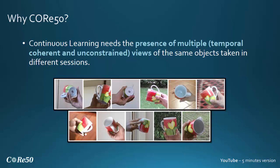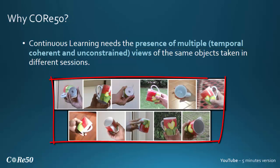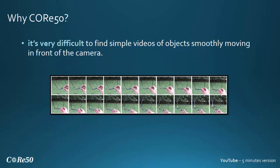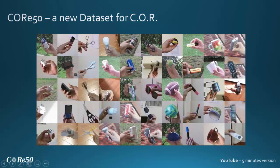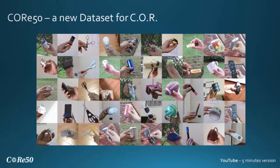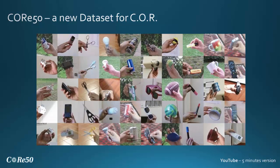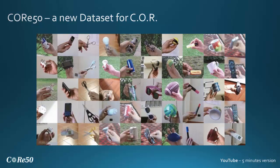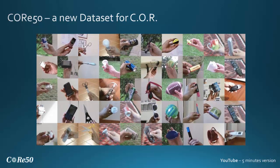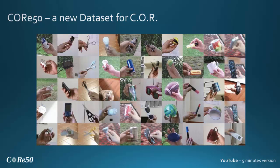So why do we need a new dataset for object recognition? Because for assessing continuous learning techniques we need the presence of multiple temporally coherent and unconstrained views of the same objects, but in different environmental conditions like illuminations, pose, scale, background, and so on. Moreover, it's very difficult to find even simple videos of objects smoothly moving in front of the camera. So we decided to collect a new dataset, CORe50, specifically designed for continuous learning, with 50 domestic objects belonging to 10 different categories. The environmental conditions can vary a lot and the temporal continuity allows us to address a larger number of applications like robotics and scenarios dealing with streaming visual perception data.